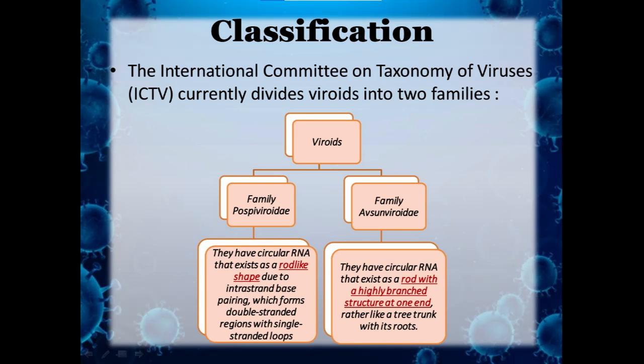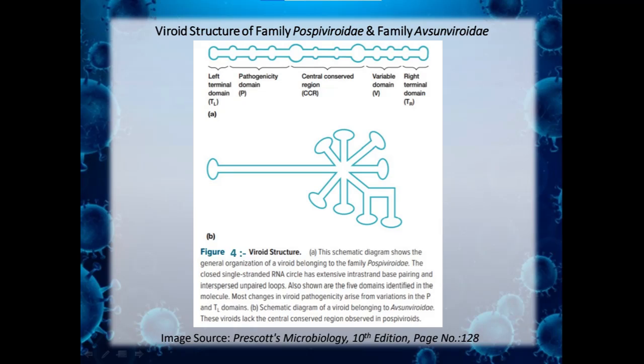Based on the International Committee on Taxonomy of Viruses, viroids are divided into two families. The family Pospiviroidae has circular RNA that exists as a rod-like shape due to intrastrand base pairing, forming a double-stranded region with a single-stranded loop. The family Avsunviroidae has circular RNA that exists as a rod with a highly branched structure at one end, rather like a tree trunk with its roots.